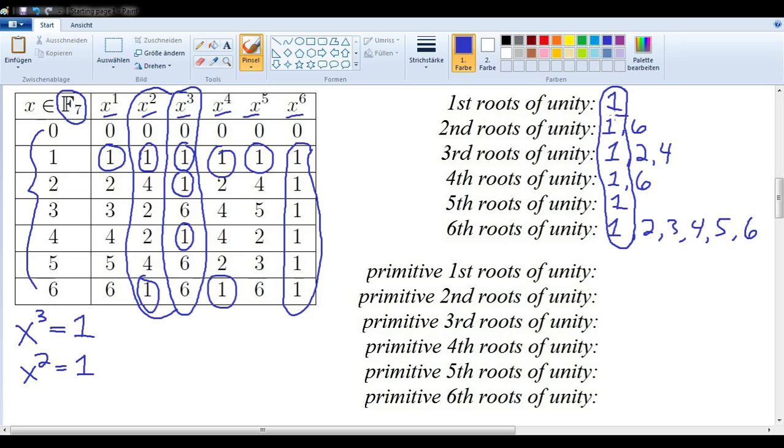Another pattern that will always be the case is that we will always find these second roots of unity. Now, it will not always be the case that we can write them as 1 and 6. But if we write them as 1 and negative 1, negative 1 just being another name for 6 in this field, then this will always be the case. In other words, the only square roots of 1 in any field are 1 and negative 1.